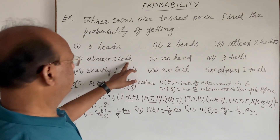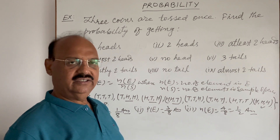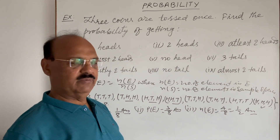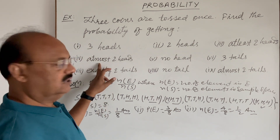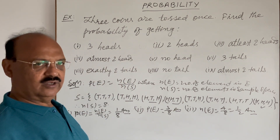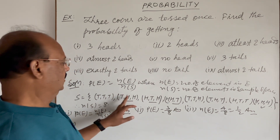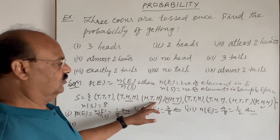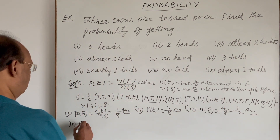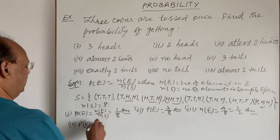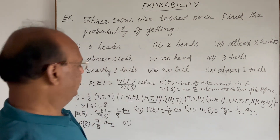Fourth part: at most two heads means a maximum of two heads, so no head, one head, or two heads are all valid. No head gives one element, two heads give three elements, and one head gives three elements — so 1 + 3 + 3 = 7. Therefore the probability of this event is 7/8.